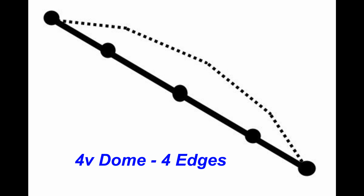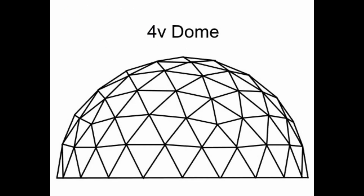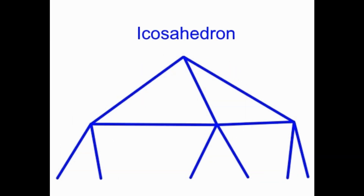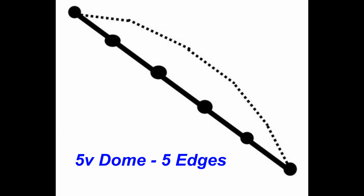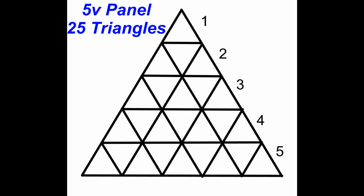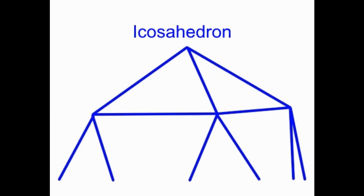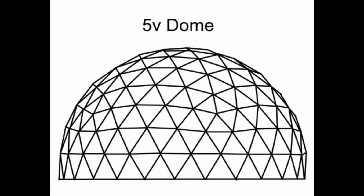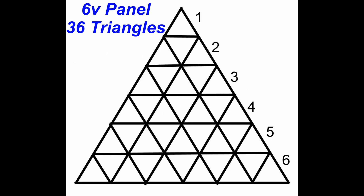Tessellating to the 4th frequency creates 4 edges pushed outward in 16 triangles, creating a 4 frequency dome from the icosahedron. The 5th frequency creates 5 edges pushed outward in 25 triangles from the original icosahedron triangle, creating a 5 frequency dome. The 6th frequency creates 6 edges pushed outward in 36 triangles, creating a 6 frequency dome from the icosahedron.